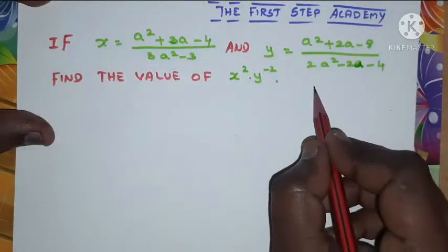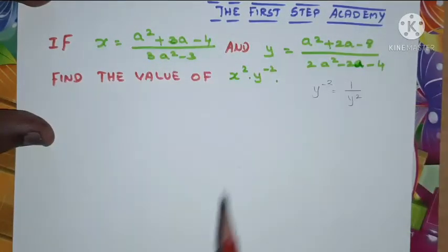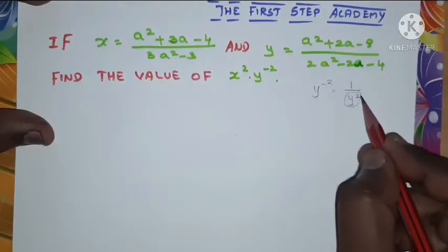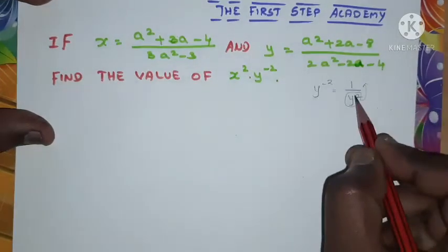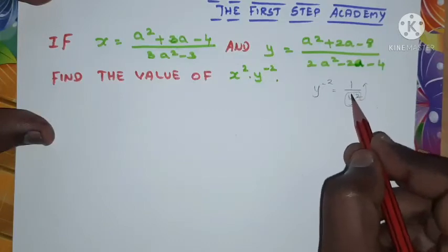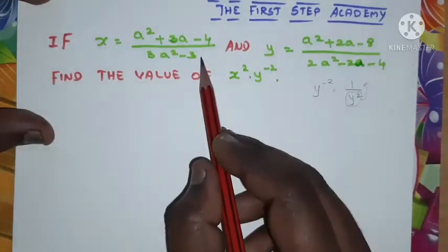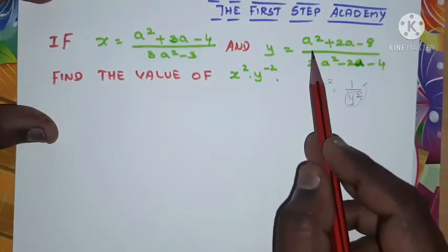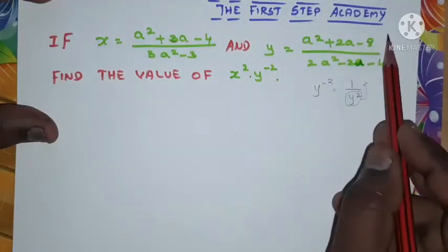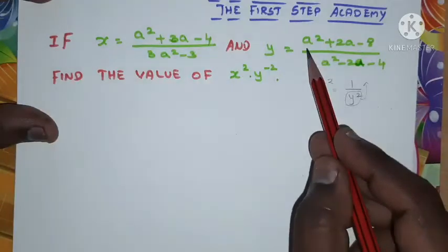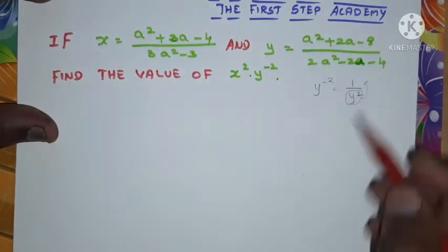We know very well that y⁻² can be written as 1/y². When a power in the denominator comes to the numerator, the sign of the power will change. So y⁻² can be written as 1/y², meaning it's a reciprocal. So the x value we can directly substitute, but for the y value we need to find the reciprocal first and then square it.